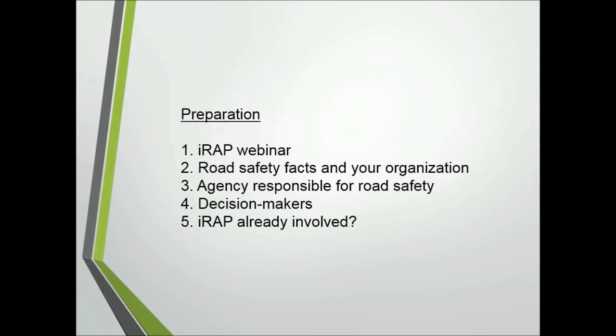Number three: find out which government agency or agencies are responsible for road building in your country, province, or state, and whether there is a department or a separate agency in charge of road safety. Number four: find out who the policy decision makers are in those agencies. You may not get to the decision makers right away, so approach lower-level staff first, and ask people in your network for help. Go to policy people, not technical people like engineers. Number five: it's possible that IRAP may already be working with your government — if so, let's talk about how you can build on their efforts.